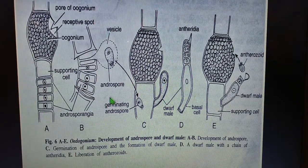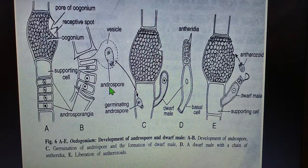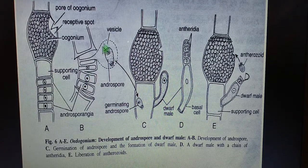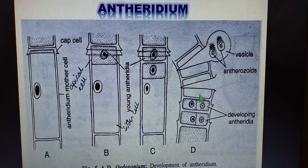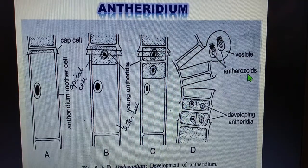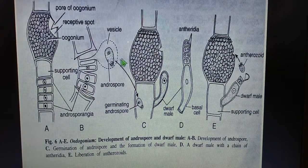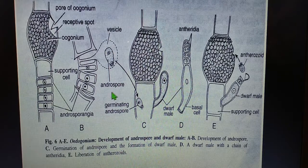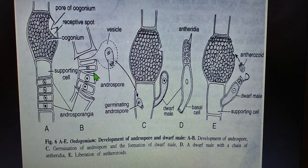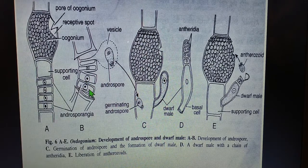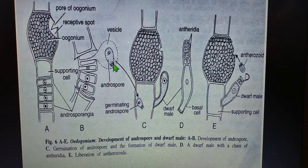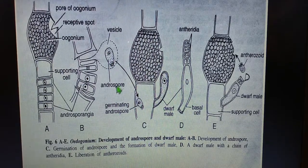The way androspores and antherozoids are formed is similar, but remember: only one androspore is produced in a single androsporangium. The nucleus of the androsporangium does not divide — the protoplast directly metamorphoses into a single uninucleate, multiflagellate androspore.